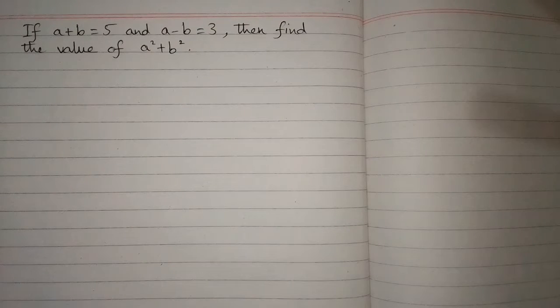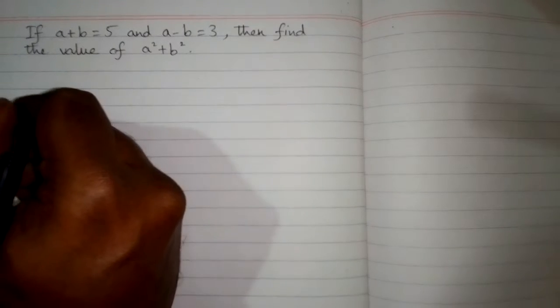If a+b is equal to 5 and a-b is equal to 3, then find the value of a²+b². So we will use algebraic identities.